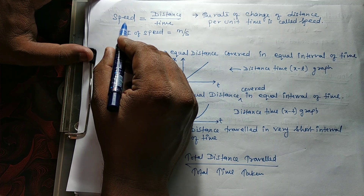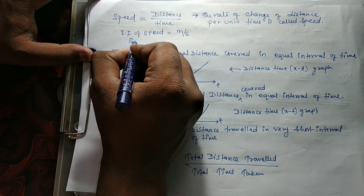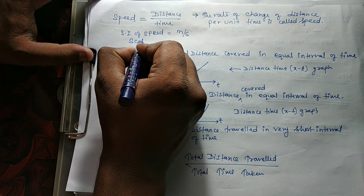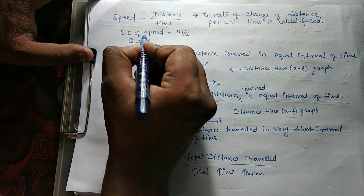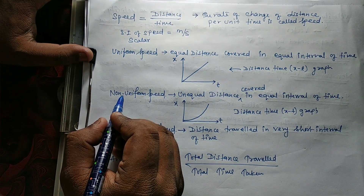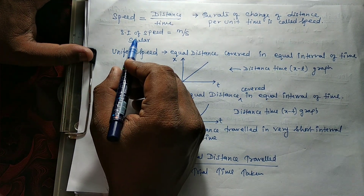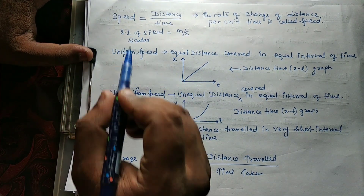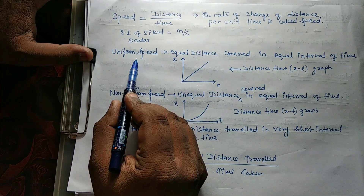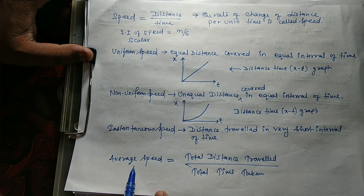Speed is a scalar quantity. This is the basic about speed. Now we will discuss about uniform speed, non-uniform speed, instantaneous and average speed.